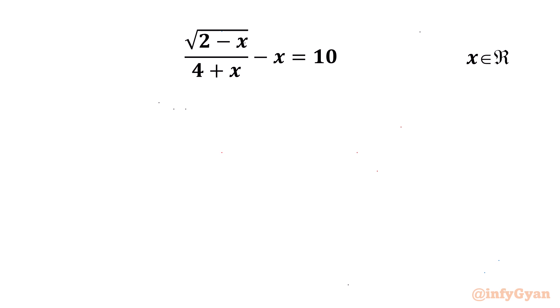Hello my dear friends, welcome back to Infigyan. In today's video we have one very interesting radical equation which we are going to solve for the real values of x. Let's get started by writing that our denominator cannot be 0 for real x, so x can't be negative 4.